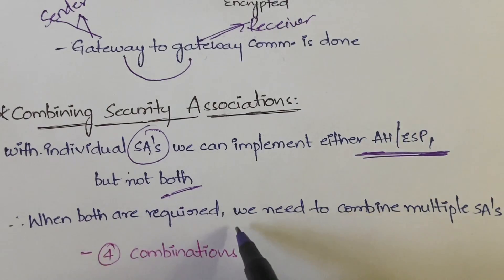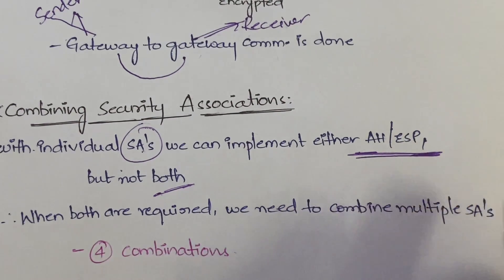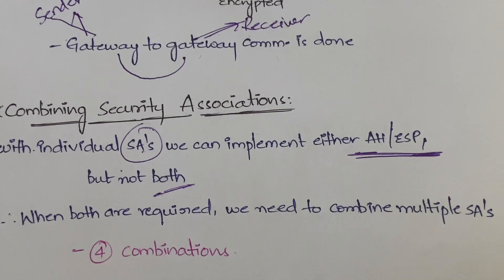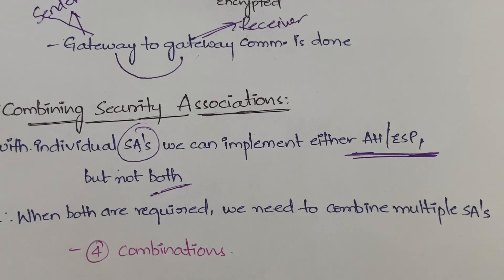But if you want both of them together — when both are required — you have to combine multiple security associations. That is what combining security associations means: in order to implement both Authentication Header and Encapsulating Security Payload at the same time in a single association, you need to go for combining individual security associations.